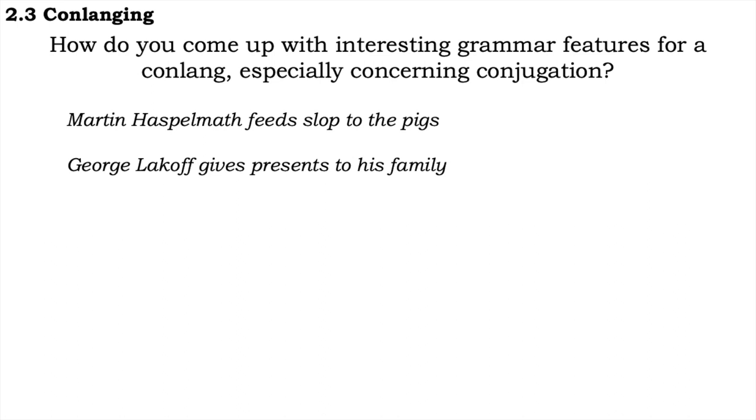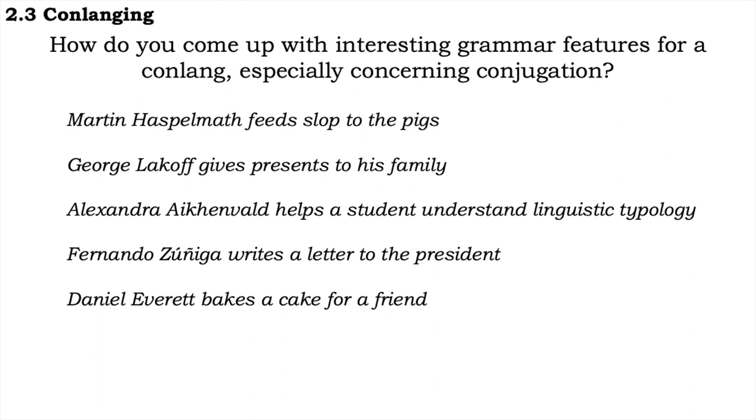Martin Haspelmath feeds slop to the pigs. George Lakoff gives presents to his family. Alexandra Eichenwald helps a student understand linguistic typology. Fernando Zuniga writes a letter to the president. Daniel Everett bakes a cake for a friend. Now, if we remove the recipient from each of these, some of the sentences become grammatically unsound, while others are fine. Martin Haspelmath feeds slop. George Lakoff gives presents. Alexandra Eichenwald helps understand linguistic typology. Fernando Zuniga writes a letter. Daniel Everett bakes a cake. By this deduction, then, verbs like feed, give, and help have the two arguments marked on the verb as the subject and recipient, while for verbs like write and bake, the two things marked on the verb are the subject and the object, and therefore require an applicative construction when other arguments are focused.